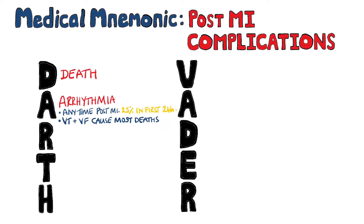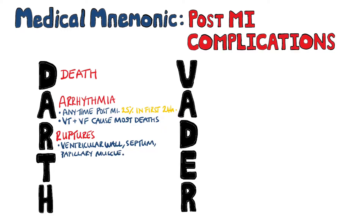R reminds us of ruptures that can occur in the ventricular wall, the ventricular septum, and in the papillary muscles. Rupture of the papillary muscle is the most common mechanical complication post-MI. These occur roughly three to five days post-MI.